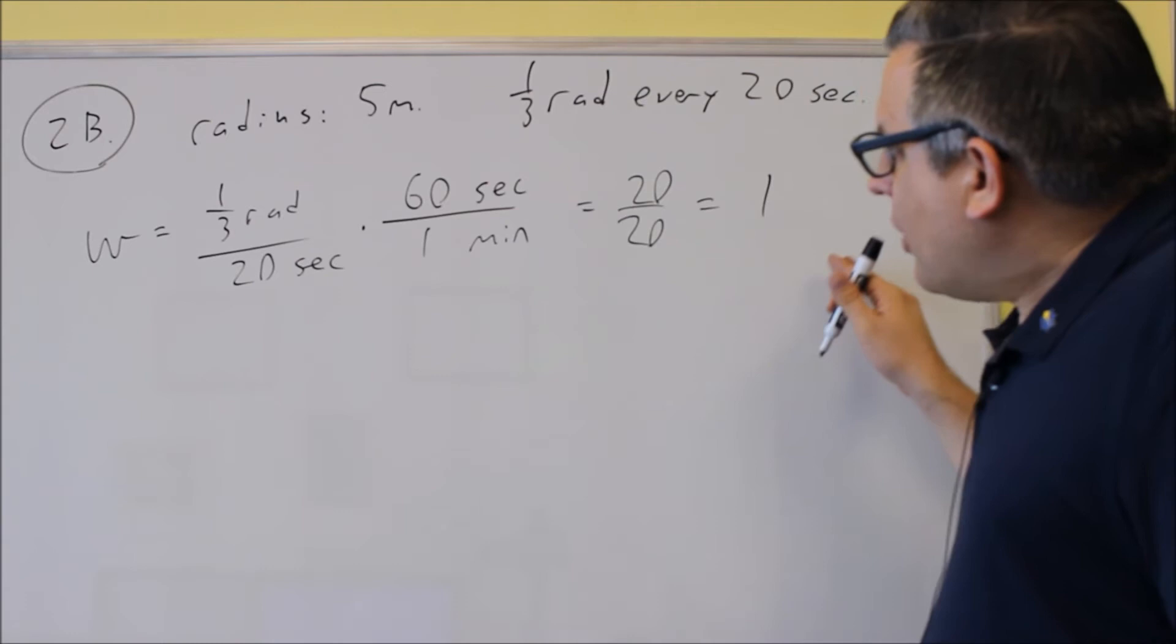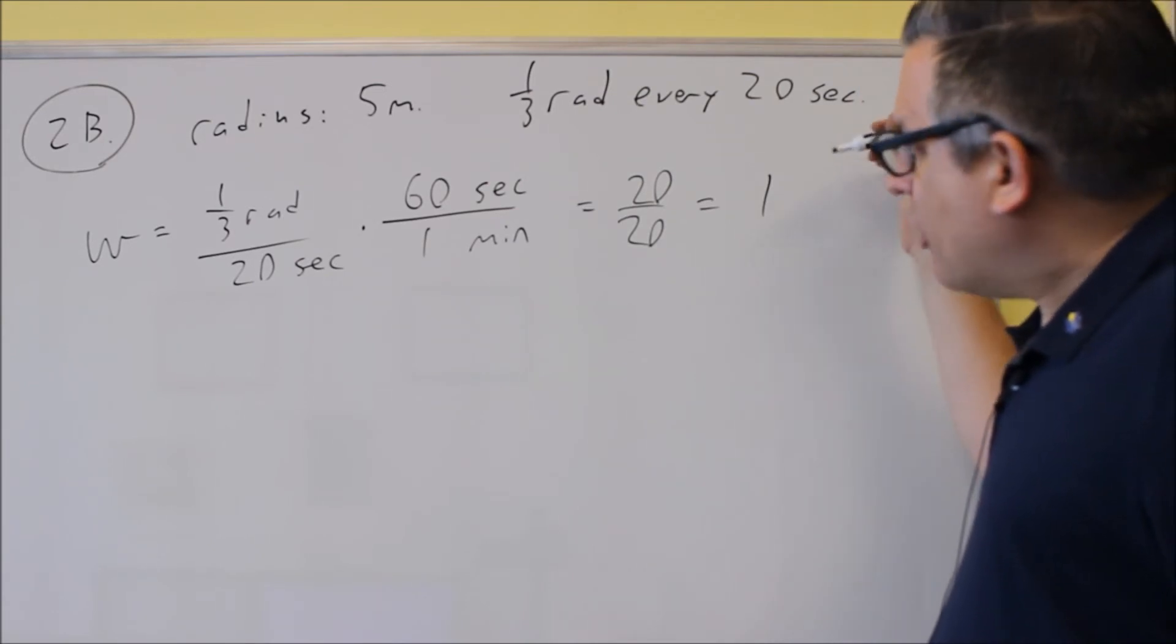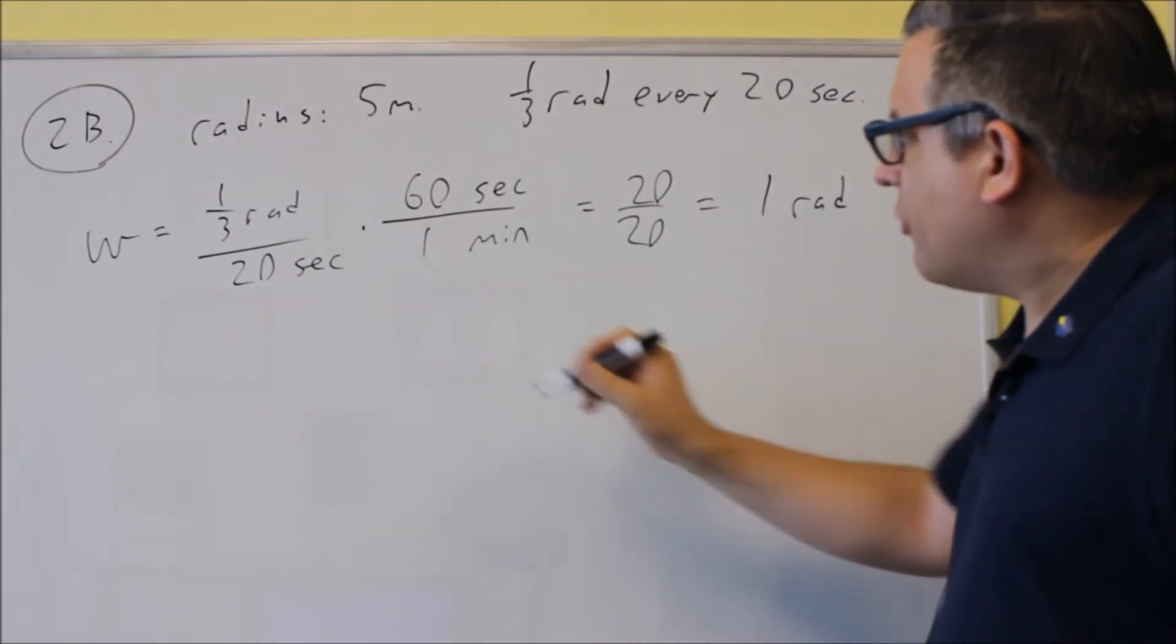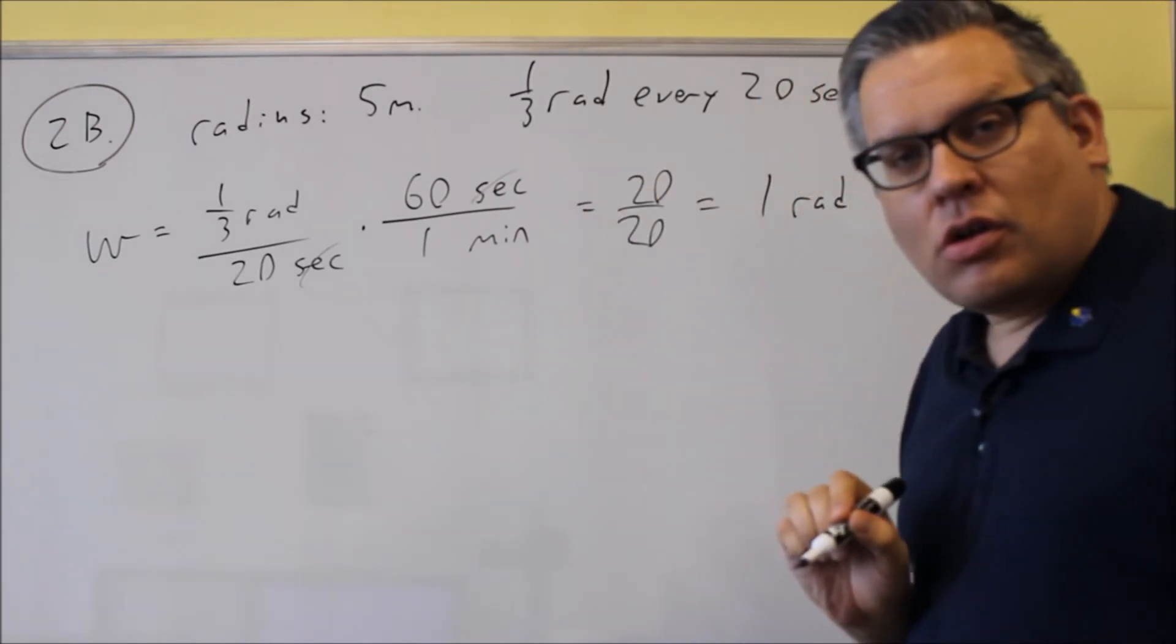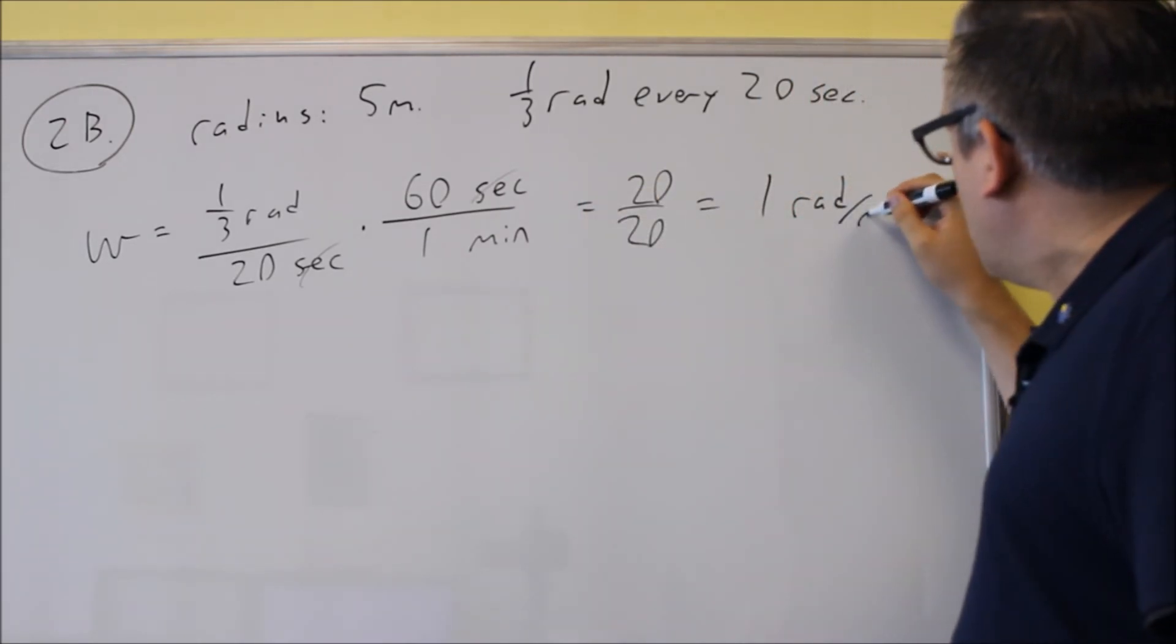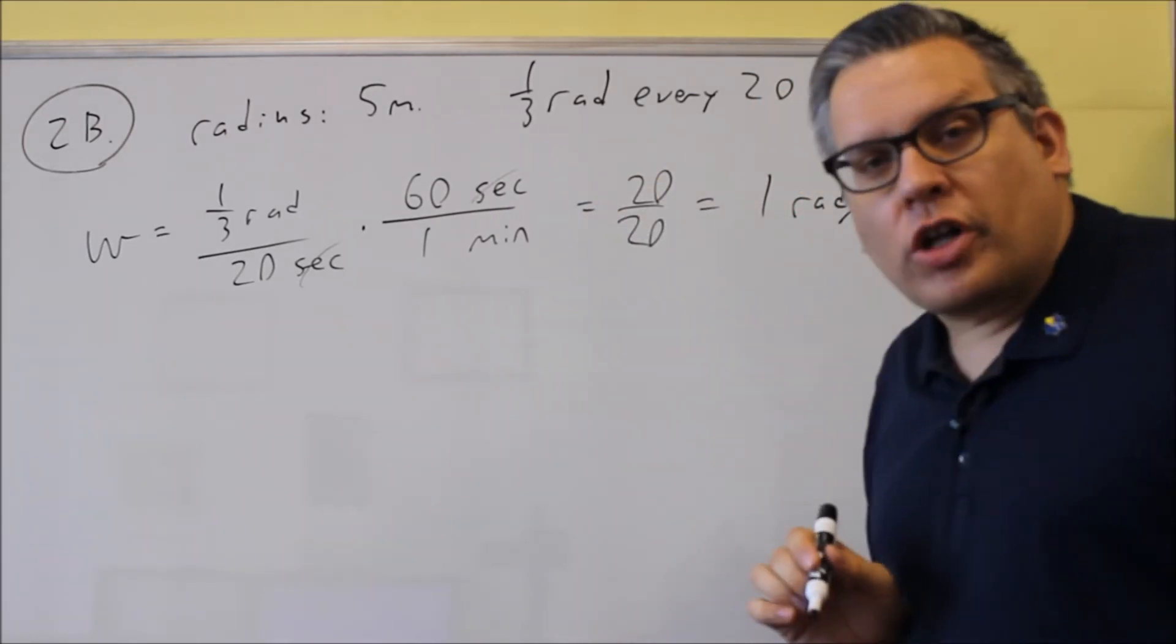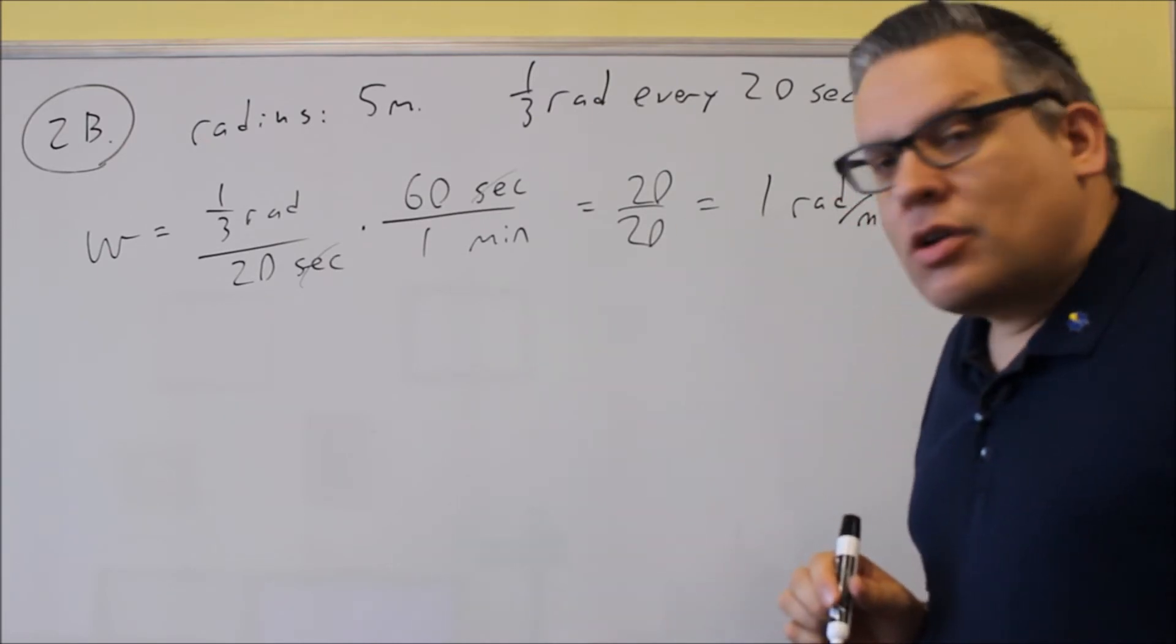So with that, we end up with 1, but the units on it will be what they're asking for. The seconds are going to cancel. And we get radians per minute. So 1 radian per minute is the answer for the angular speed.